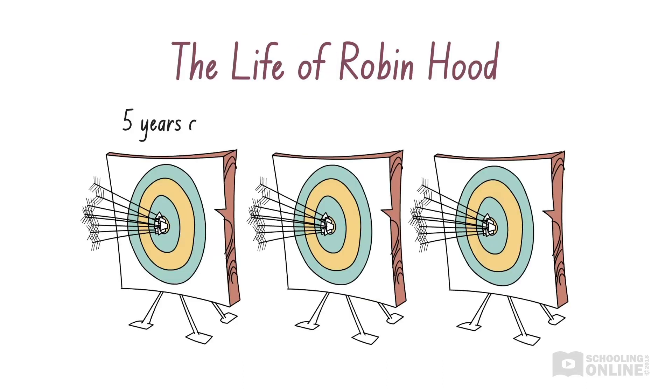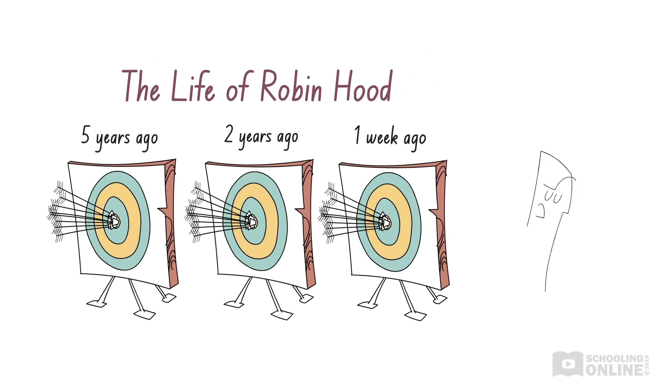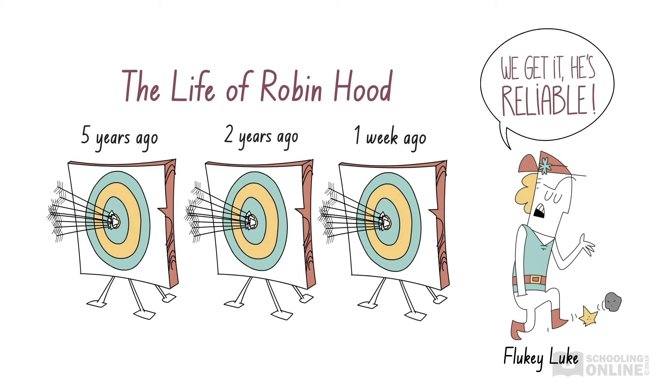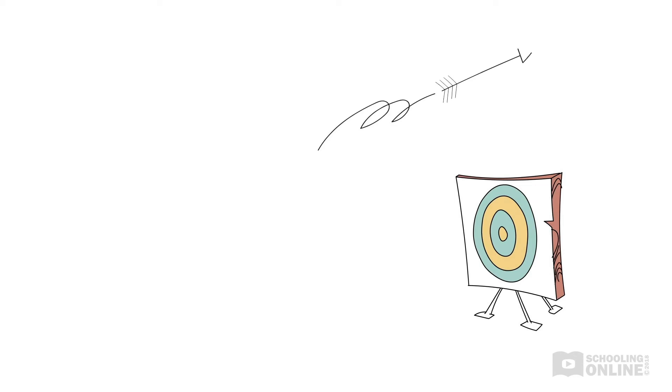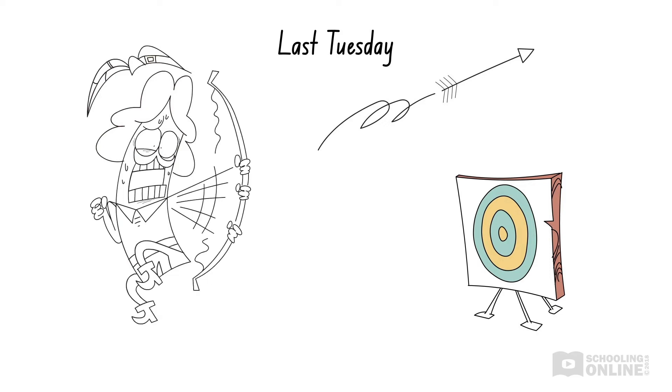For example, let's consider Robin Hood's archery history over the past five years. As expected, the overwhelming majority of his shots land in the bullseye. But what's this? He completely missed the target during practice last Tuesday. This looks like an outlier. We have to find some way to justify this poor performance on Robin Hood's behalf.